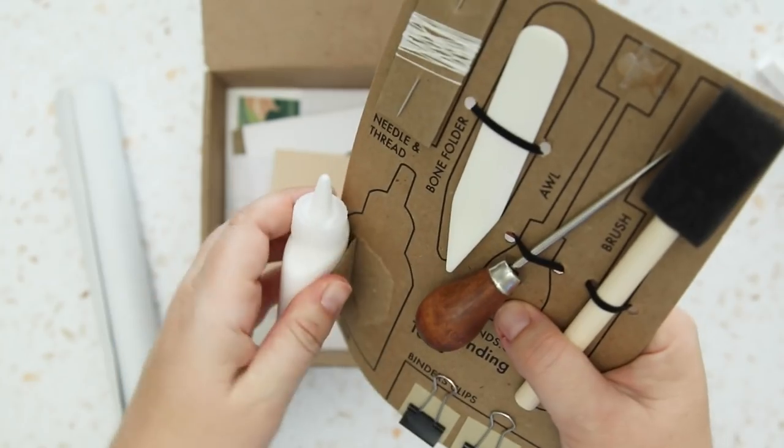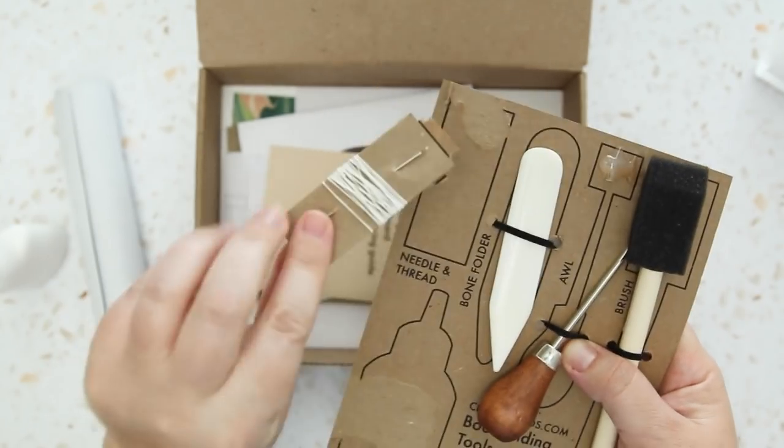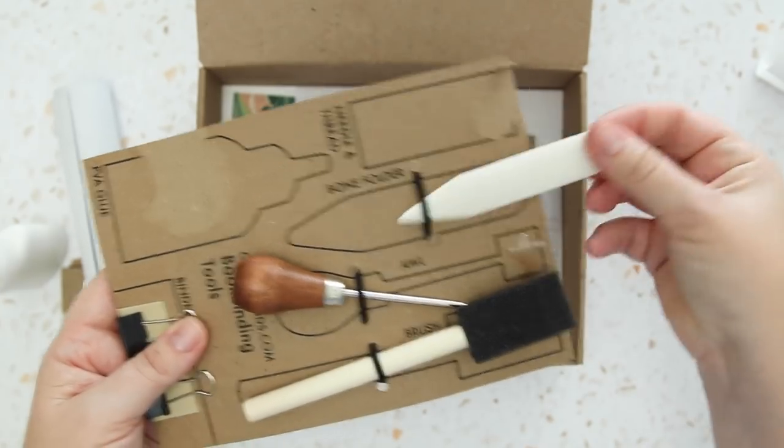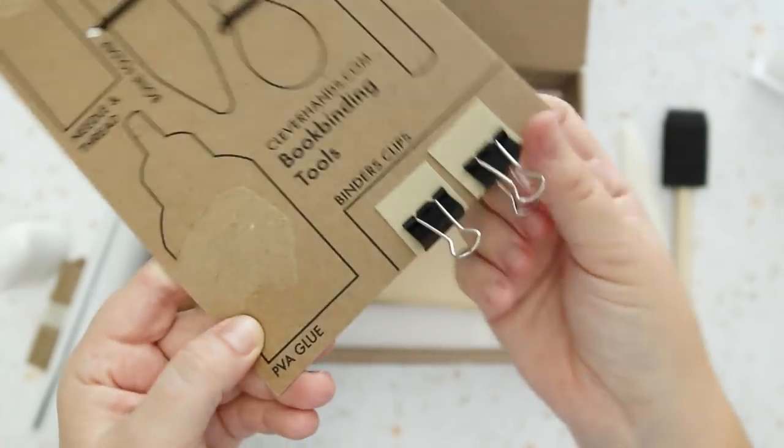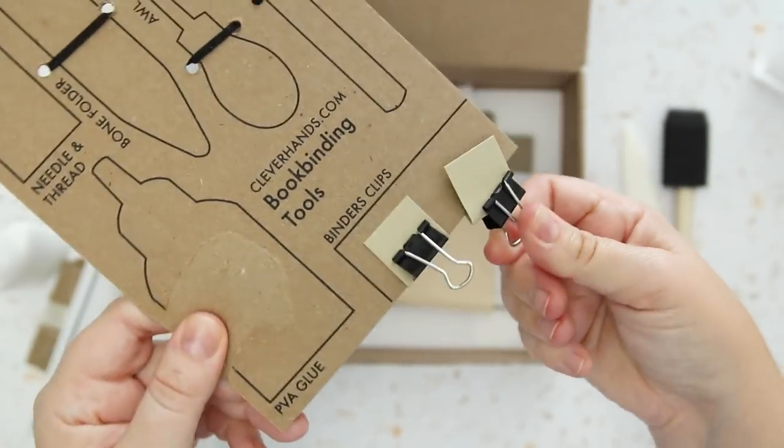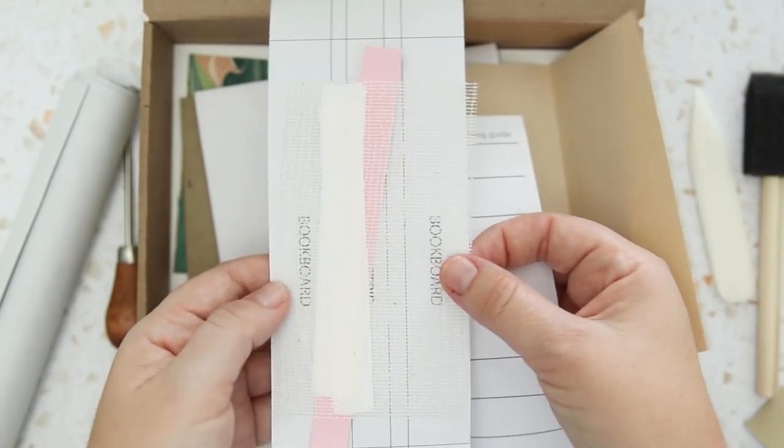We've got a little bottle of PVA glue, waxed linen thread, and a binding needle. The cutest little bone folder I've ever seen. We've got an awl and a foam brush. Two binder clips with cardstock pieces. Then we have a punching guide, some mull fabric, three twill tapes,